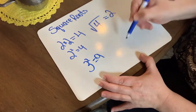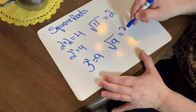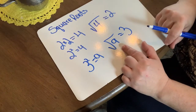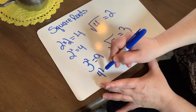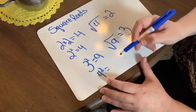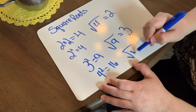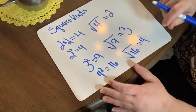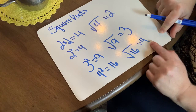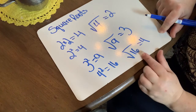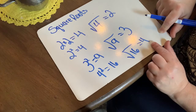3 squared equals 9, so the square root of 9 would be 3, because the two factors that are the same for 9 are 3 times 3. If I look at 4 squared — 4 times 4 — that's 16, so the square root of 16 would be 4, because the two factors that are the same number are 4.